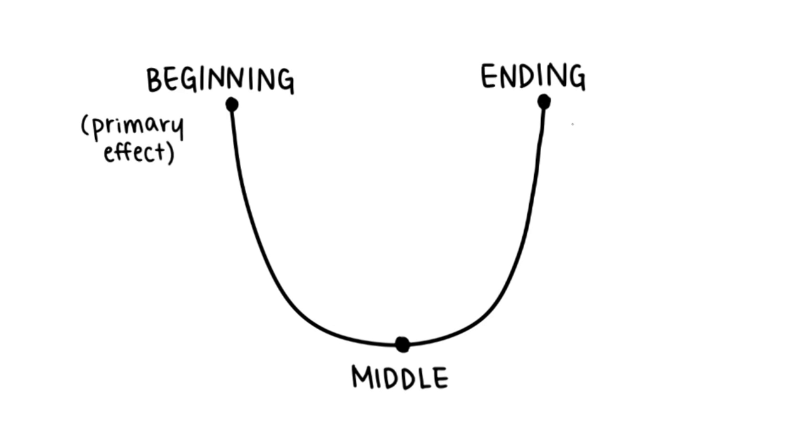Basically, the U-shaped curve means that you begin something at a high point and lose track of it in the middle, only to end again at a high point. That would be the primary effect and the recency effect, the two points of the U.